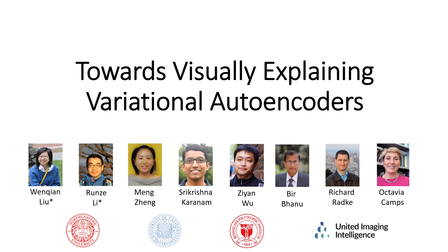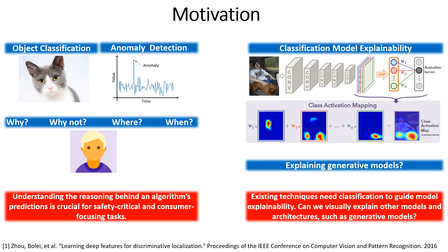Hello everyone, we are happy to present our work visually explaining variational autoencoders. Dramatic progress in computer vision has led to widespread adoption of the associated algorithms in real-world tasks. Applications in many safety-critical and consumer-facing areas demand understanding of the reasoning behind an algorithm's prediction. However, existing techniques require a classification module to guide the explainability, leading to a natural need to explain a wider variety of neural network models and architectures, such as generative models.